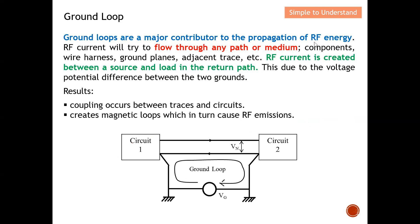Ground loops are a major contributor to the propagation of RF energy. RF current will try to flow through any path or medium — for example, through components, wire harnesses, ground planes, adjacent traces, etc. Basically they can find any return path, and when they do, you potentially create a ground loop. RF current is created between a source and load in the return path, due to the voltage potential difference between the two grounds.